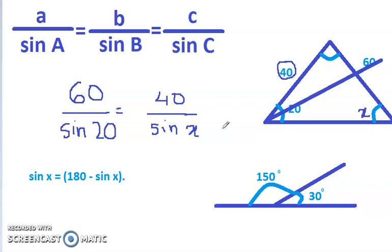So 60 upon sine 20 happens to be 175.428 equals 40 upon sine X. Now if I try cross-multiplying, the sine X goes up and this 175.428 comes down. So we have sine X is equal to 40 upon 175.428. So let's do that.